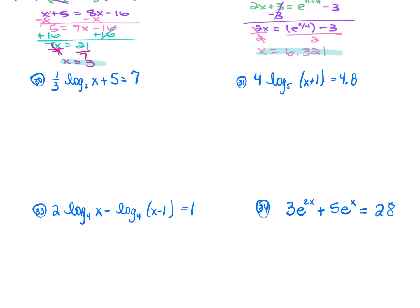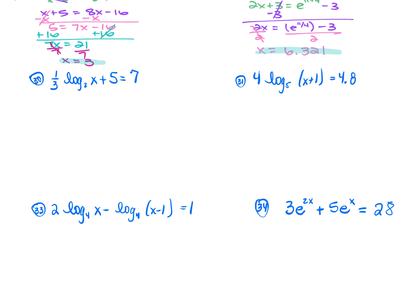For number 30: (1/3)·log₂(x) + 5 = 7. Subtract 5 from each side: (1/3)·log₂(x) = 2. Multiply both sides by the reciprocal 3: log₂(x) = 6. Base is 2, so raise 2 to both sides: 2^(log₂(x)) = 2⁶. The 2 and log₂ cancel: x = 64.